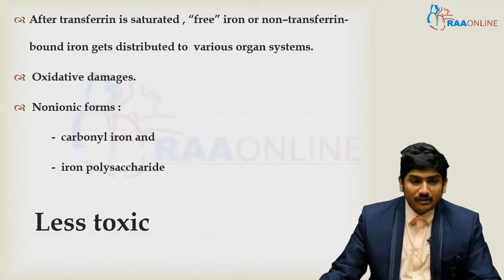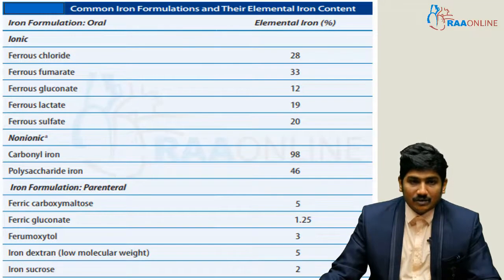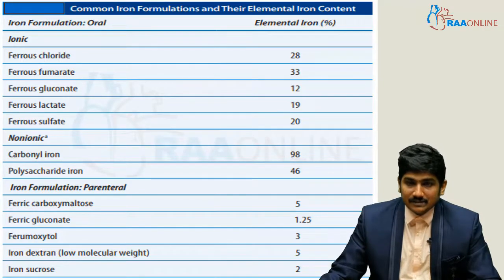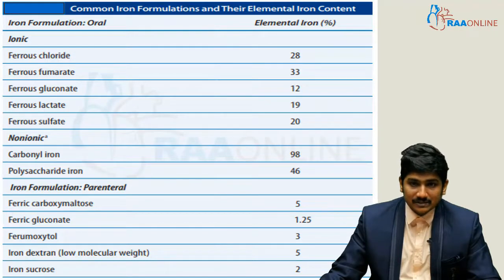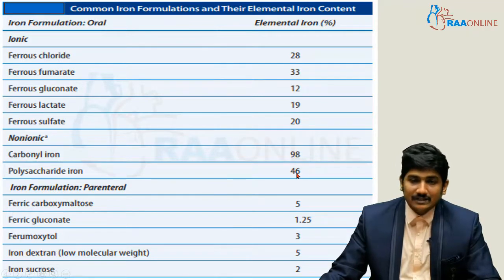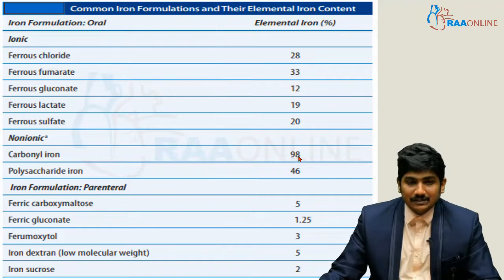The non-ionic forms are carbonyl iron and iron polysaccharide. Looking at common iron formulations and their elemental iron content: ferrous chloride contains around 28%, ferrous fumarate around 33%, ferrous gluconate around 12%, ferrous lactate around 19%, and ferrous sulfate around 20% elemental iron. Carbonyl iron contains around 98% and iron polysaccharide around 46% elemental iron, yet despite these high percentages, their toxicity is actually less.